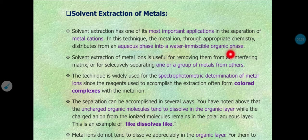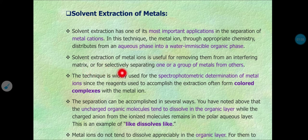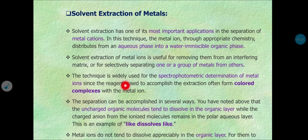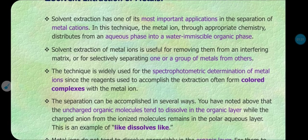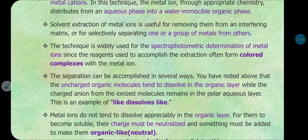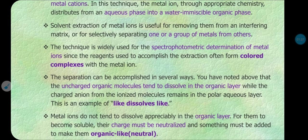Ions dissolved in the aqueous phase are separated and distributed into the organic layer, and then we can separate them from the mixture. Solvent extraction of metal ions is useful for removing them from an interfering matrix or mixture, for selecting or separating one or groups of metals from other metal ions. The technique is widely used in spectrophotometric analysis of metal ions, since the reagents often form colored complexes with the metal ions, allowing concentration determination by spectrophotometric analysis.